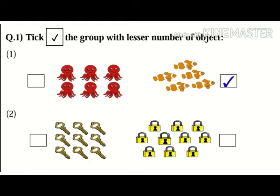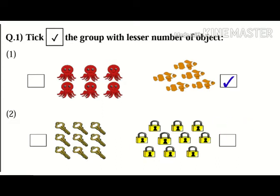Question number two. Here on the left hand side we have pictures of keys and on the right hand side there are pictures of locks. Let us count — how many keys are there? Yes, there are nine keys. And how many locks are there? Ten locks. Very good. So which is the less number — nine or ten? Correct, nine is the less number.